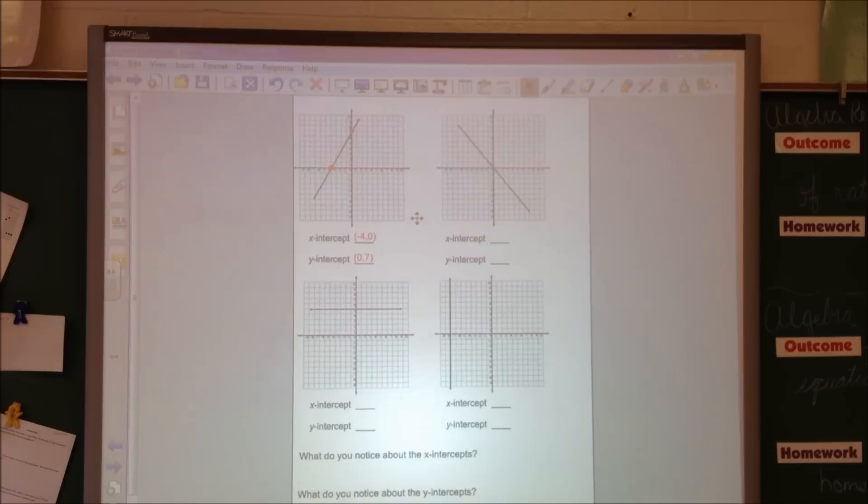For our second graph, my x-intercept is right here. I guess I had to do something funky. It's not working. But it's right there in the middle. So for the x-intercept, my point is 0, 0. And my y-intercept is the same thing, because it's going through the origin of the graph.